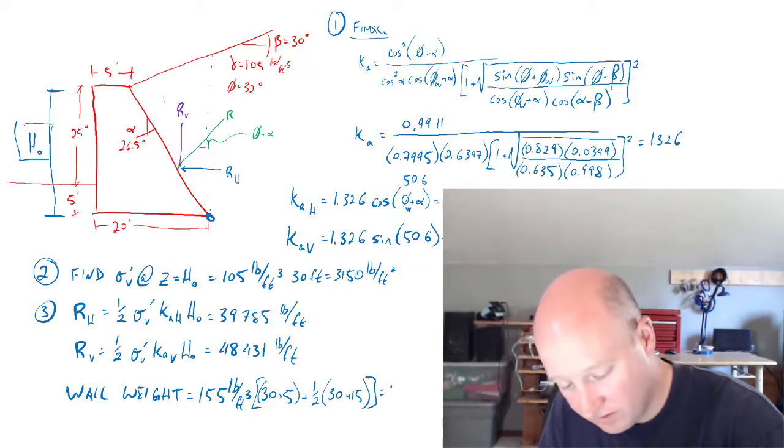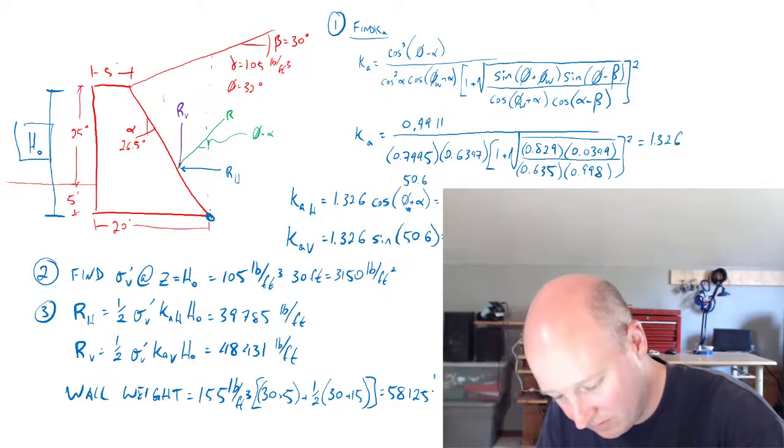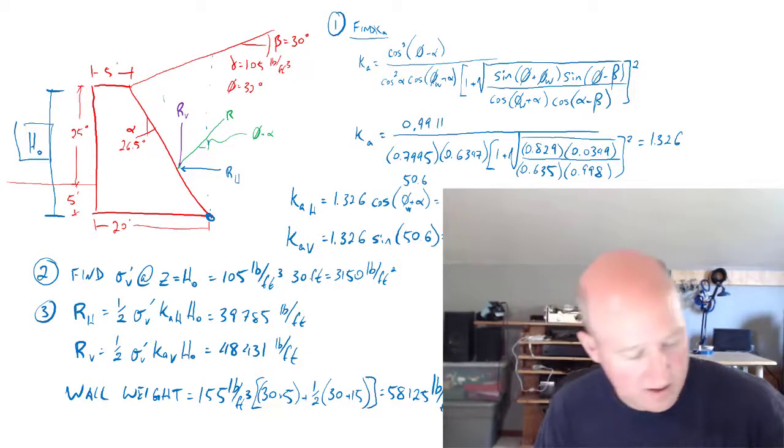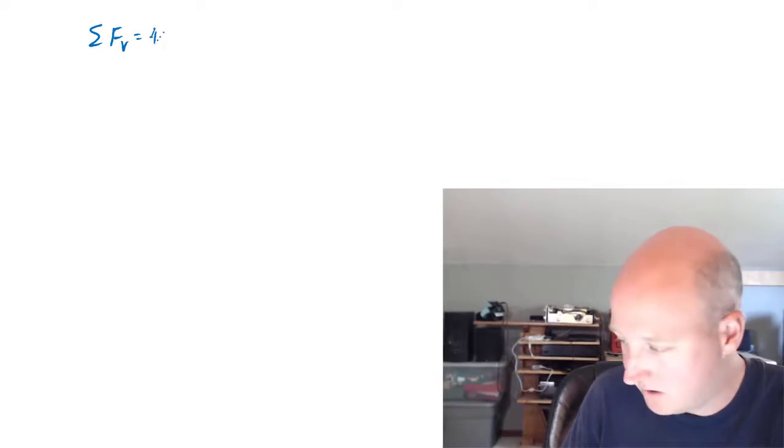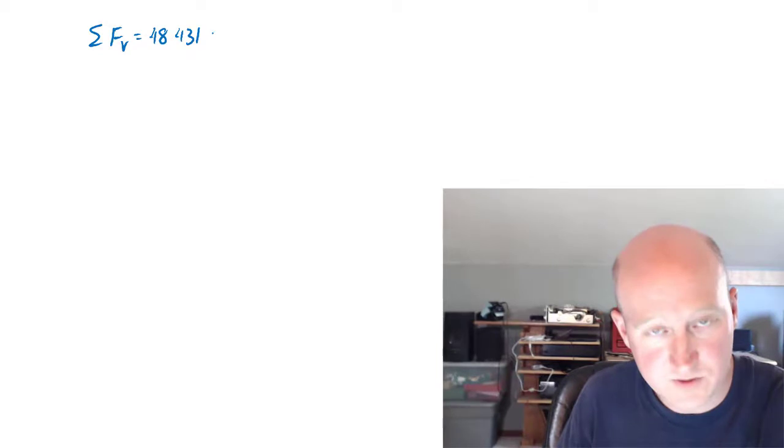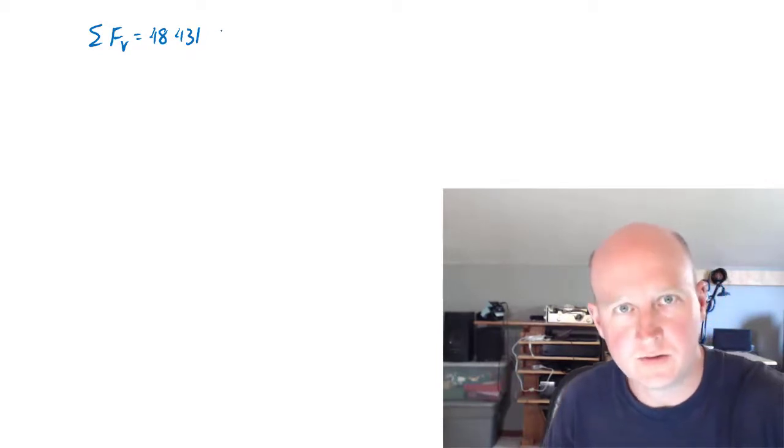So the total weight is 58,125 pounds per linear foot of wall. So now we need to do our sliding calculations. So our sum of forces in the vertical direction are 48,431. That's the resultant, that's the weight of the soil that's pushing down on the back of the wall, plus the weight of the wall.